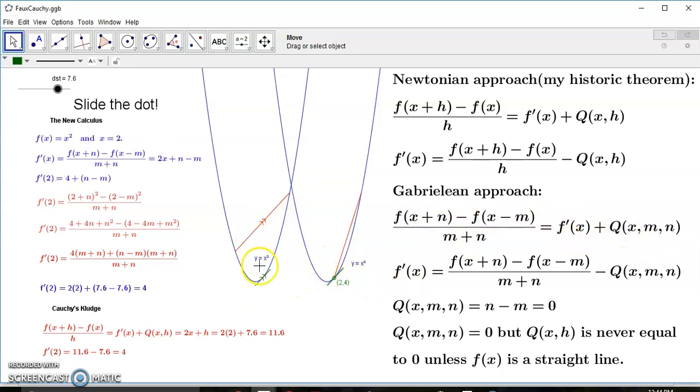Now what is the difference between these two parallel lines? Zero. That's right. That's why Q(x,m,n) is always zero, because there is no difference.